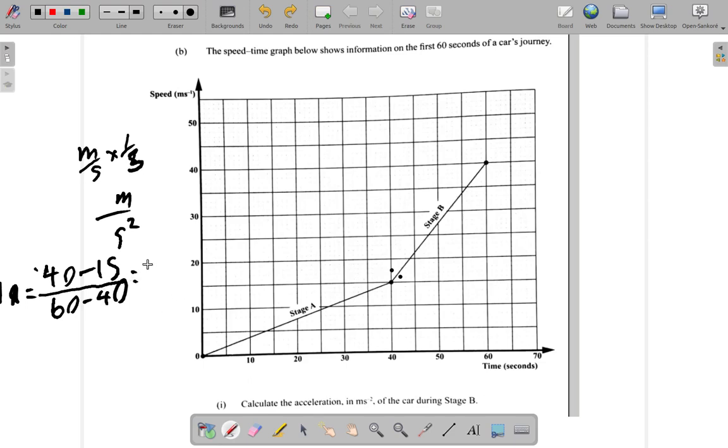So 40 minus 15. That's what? 40 minus 10 is 30. Minus 5 more. That's 25 over 60 minus 40. So that's 20. 25 over 20. 5 to 25. 5 and 5 to 24. So that's 5 over 4. It is 1 point. It's 1 and 1 quarter. 1.25.